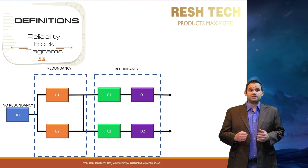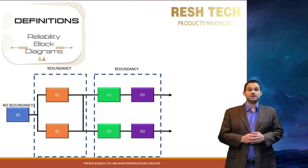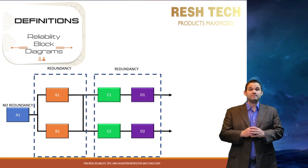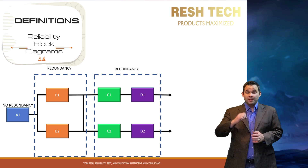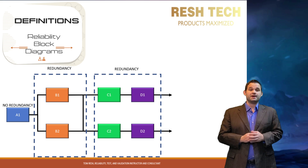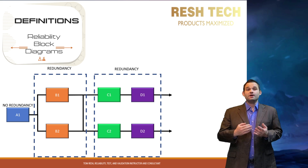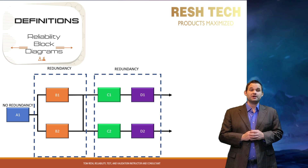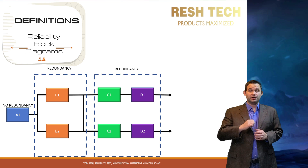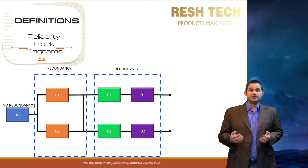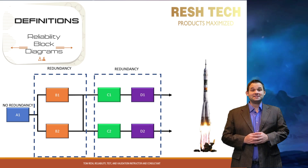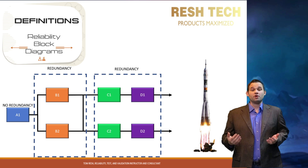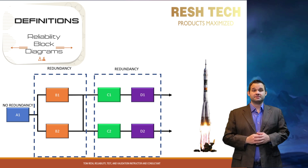Reliability block diagrams are a way to visualize redundant and non-redundant components within a system to find the overall reliability of a system. The more redundancy that is built into a system, the higher the reliability will be for that particular system. The name of the game in system reliability is to build redundancy into your system for key operational and safety functions.